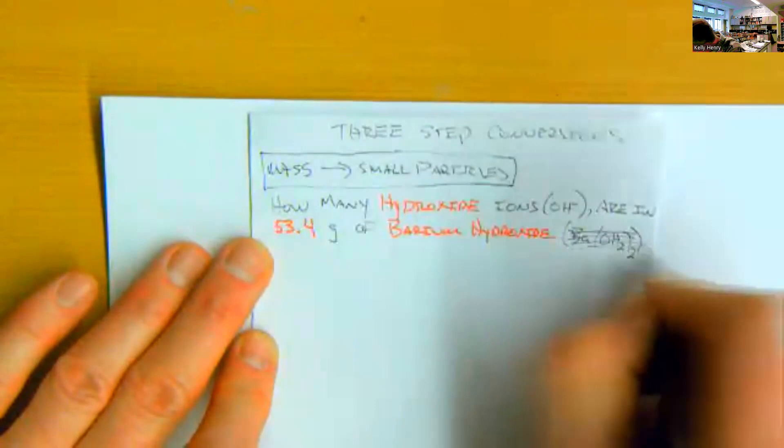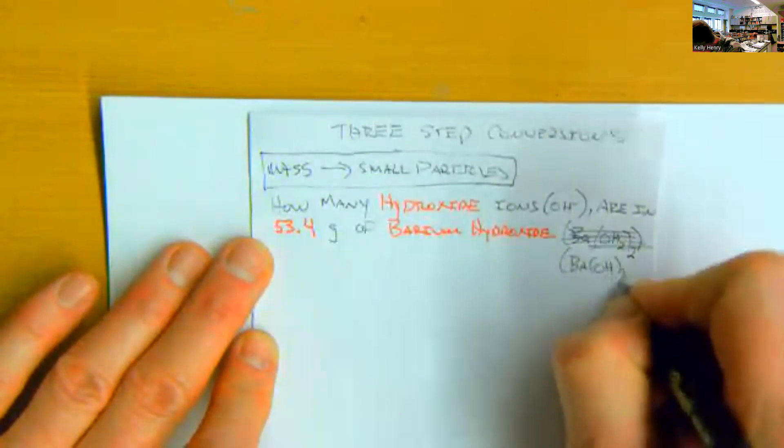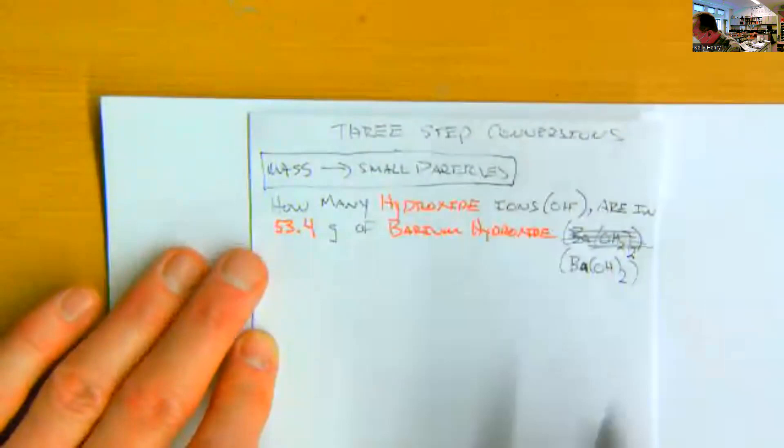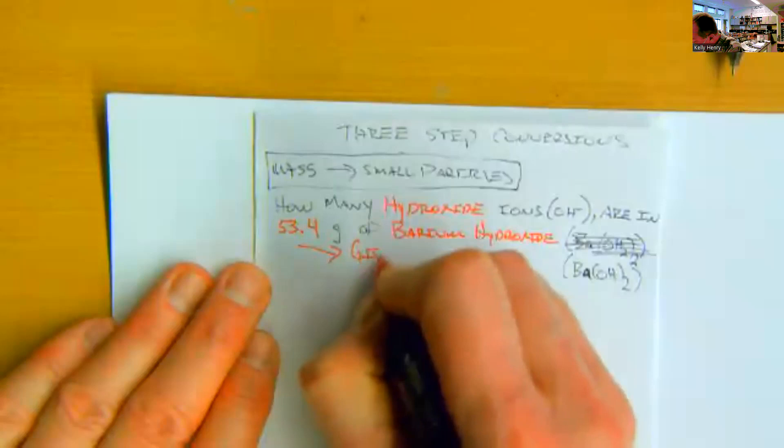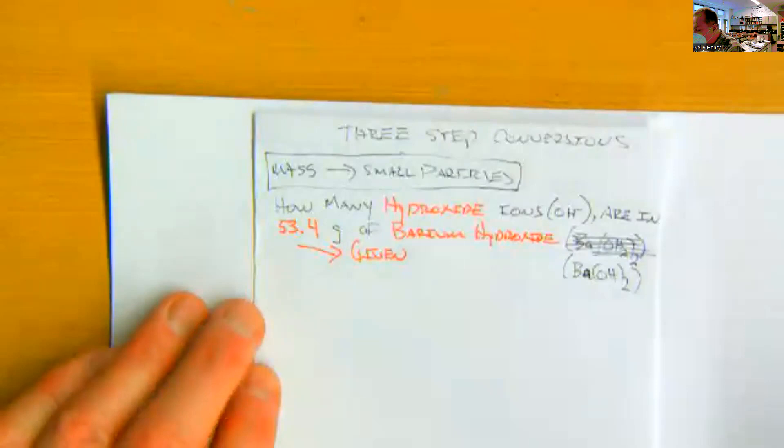Barium hydroxide — barium is a plus two cation, each hydroxide is a minus one, therefore we have two of them. And 53.4 grams of barium hydroxide is what we're given.